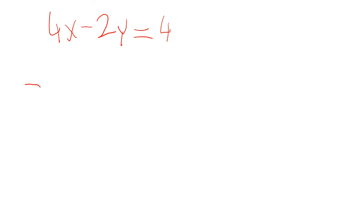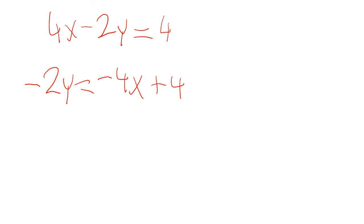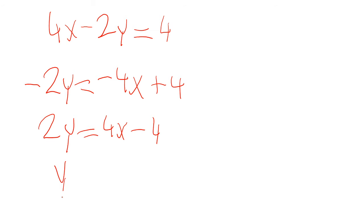Let's convert to slope-intercept form. Negative 2y is equal to negative 4x plus 4. We can multiply every single term by negative 1 and get 2y is equal to 4x minus 4. Now we just divide everything by 2. We get y is equal to 2x minus 2.